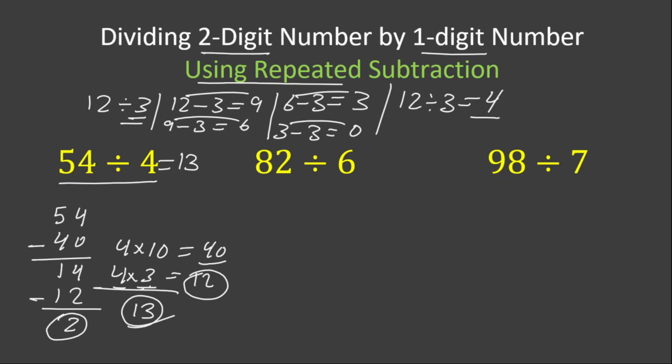We now move to the next example. We have 82 divided by 6. Again, we look for a number that should be multiplied by 6 and give us a two-digit number that ends in 0. 10 times 6 is 60. If we subtract 60 from 82, we will get 2 minus 0 is 2 and 8 minus 6 is also 2.